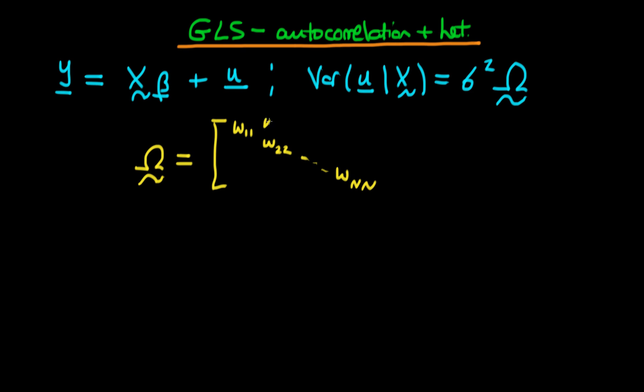But unlike before, we're going to assume that this matrix also has off-diagonal components. So the second component would be omega 1-2, and if we continue all the way over to the right-hand side, we would have omega 1-n. If we go all the way down to the bottom, we will also have omega n-1, and we could fill in all the various components in between.